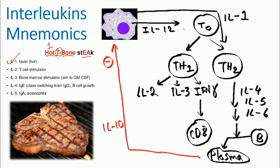Then capital T is the second interleukin. So the function of interleukin 2 is T cell stimulation. Then the third one, bone. So interleukin 3, bone marrow stimulator. It stimulates the granulocyte monocyte colony stimulating factor and also granulocyte colony stimulating factor.